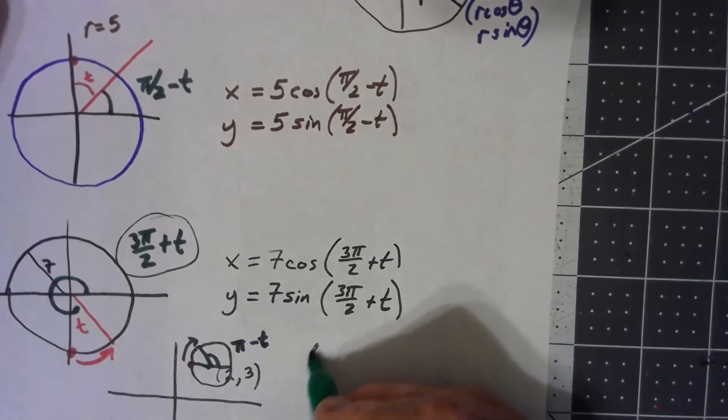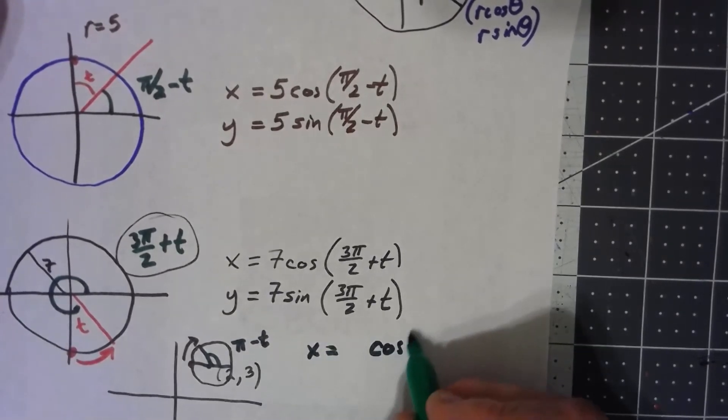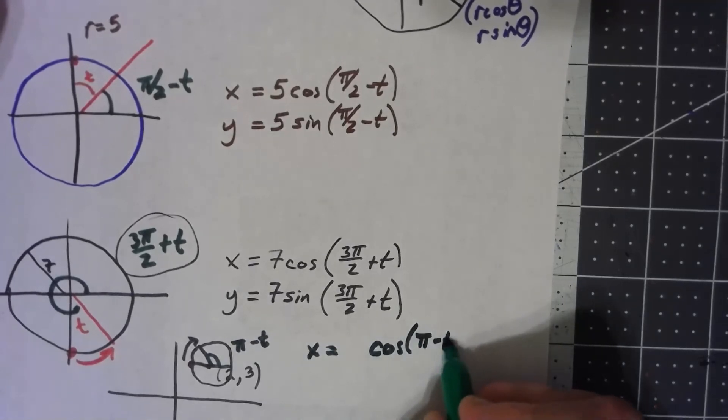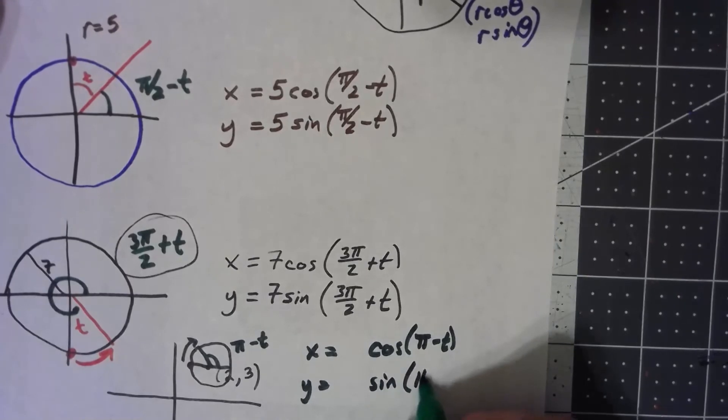My radius was 1, so I've just got 1 cosine of pi minus t, y the sine of pi minus t.